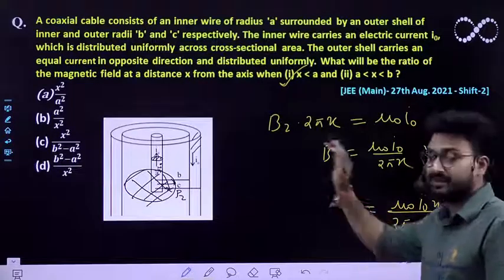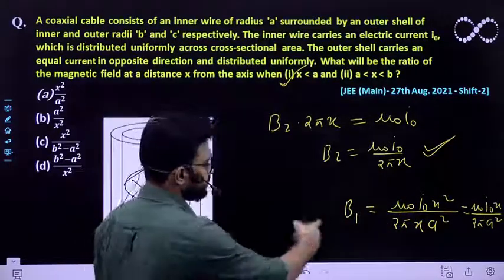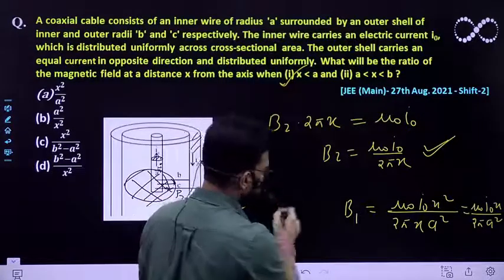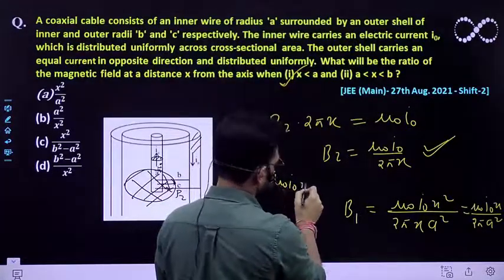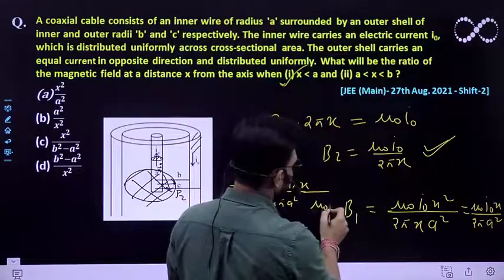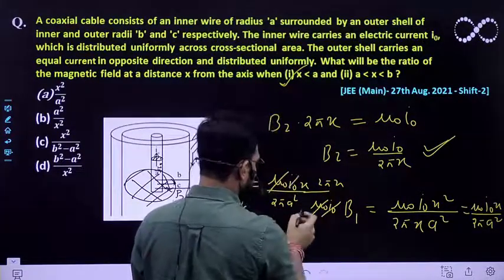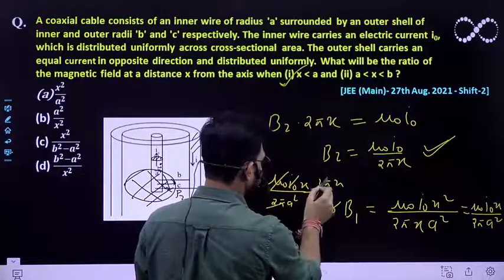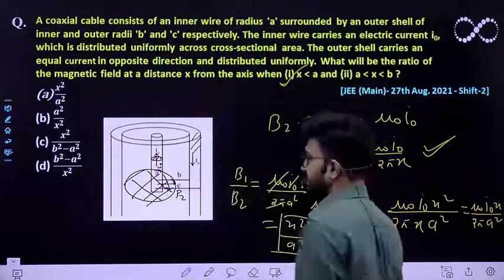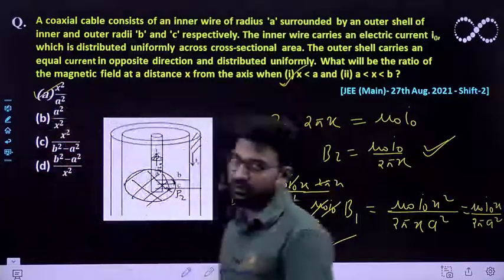So you have to find out the ratio of B1 by B2. So what is B1 by B2? B1 is mu0 I0 x by 2 pi A square. B2 is mu0 I0 by 2 pi x. So mu0 will cancel out each other. This will also cancel out. 2 pi would also cancel out. You will be getting x square by A square. So this is the expression that we are getting. So our answer would be A which is x square by A square.